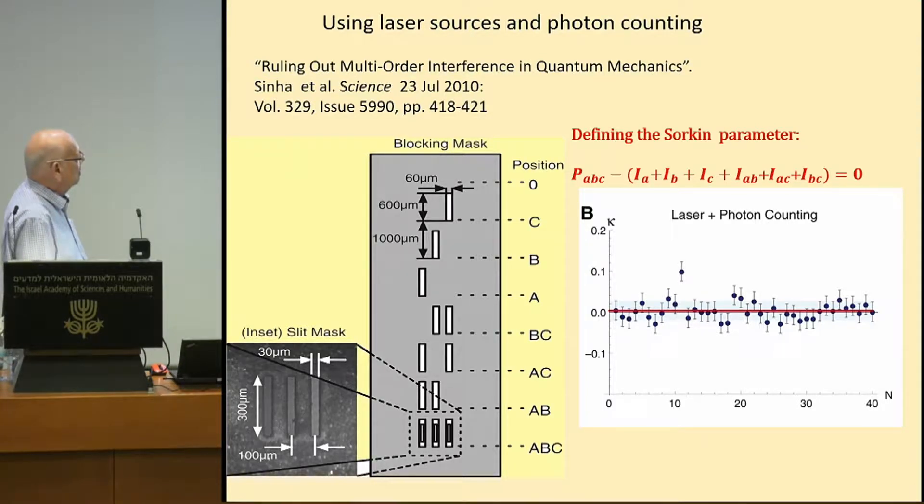This represents a diffraction experiment with a very good source, laser, and very good detectors, photomultipliers, to compute the Sorkin parameter as a function of the position on the screen. And indeed it gives us a zero result on the average. But look at the errors. The amount to something like a few percent.